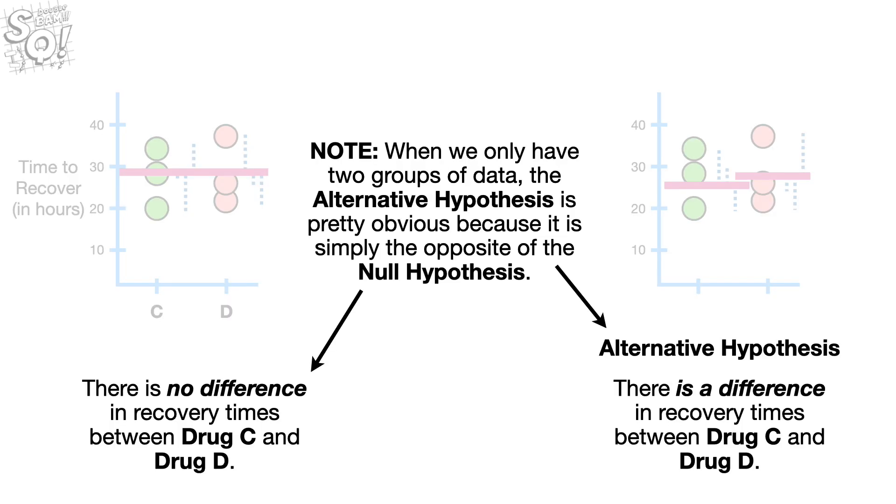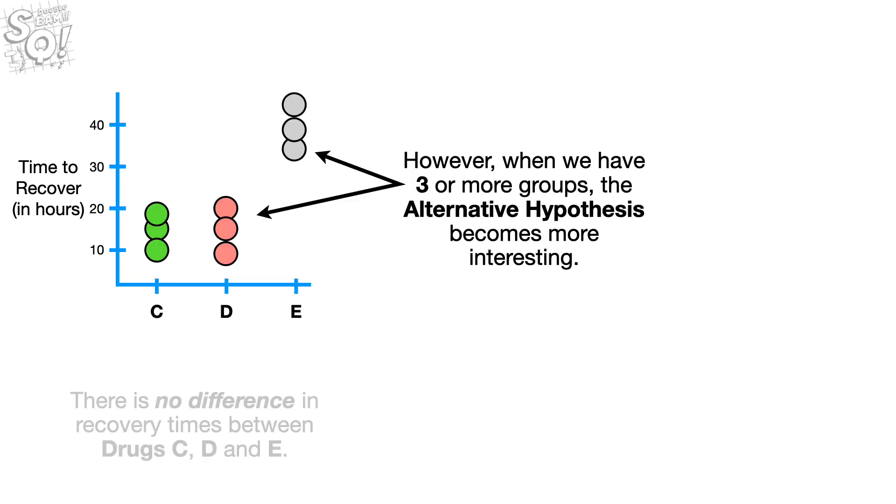Note, when we only have two groups of data, the alternative hypothesis is pretty obvious because it is simply the opposite of the Null Hypothesis. However, when we have three or more groups, the alternative hypothesis becomes more interesting.